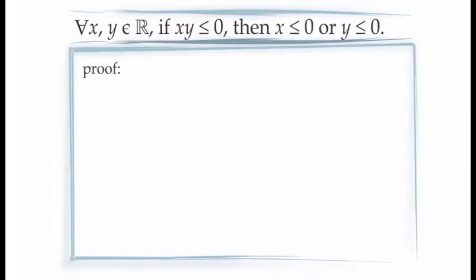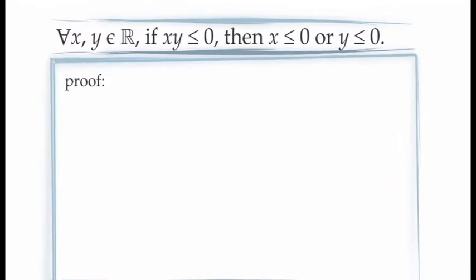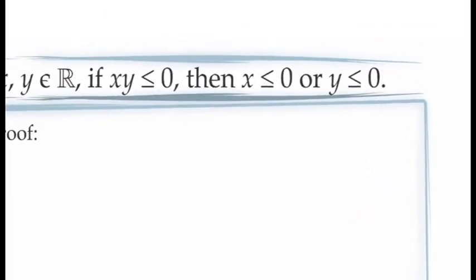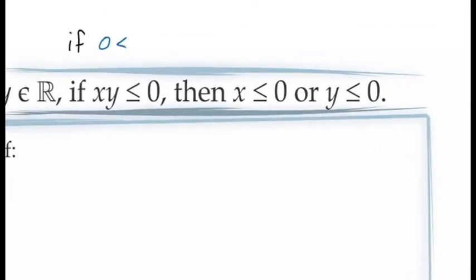Here, we're going to prove the statement: for all X and Y in the real numbers, if the product XY is less than or equal to 0, then at least one of the two terms X or Y must be less than or equal to 0 as well. Writing the conditional statement in its contrapositive form, we have: if X is greater than 0 and Y is greater than 0, then the product XY must be greater than 0. And this is a much easier statement to prove.